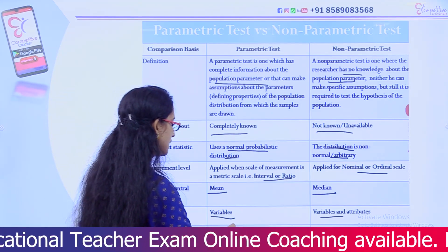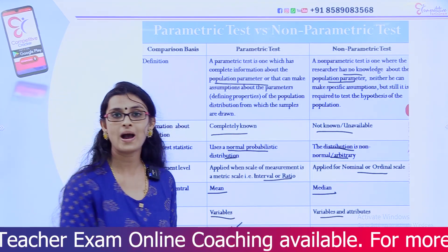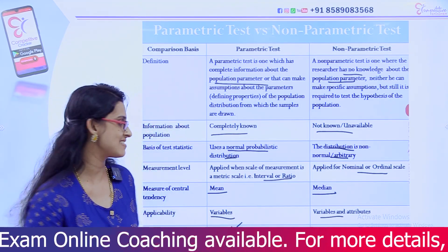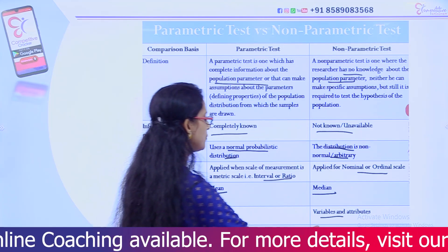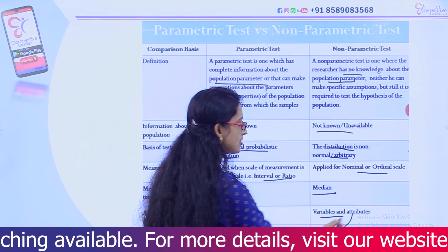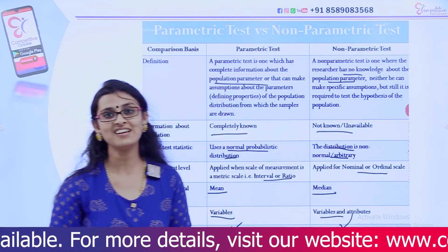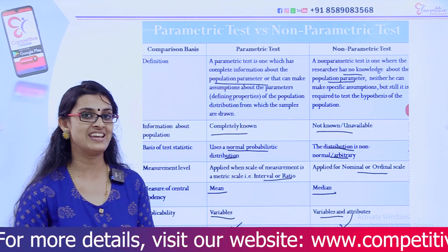A common parametric test is the Pearson correlation, while a non-parametric counterpart is the Spearman rank correlation.